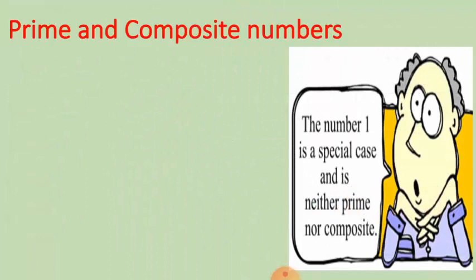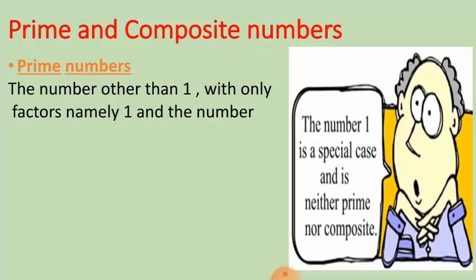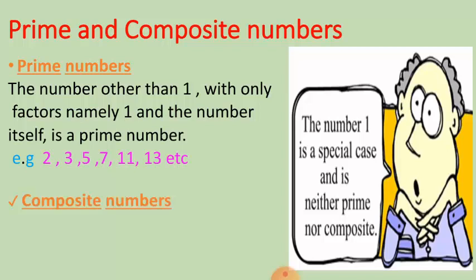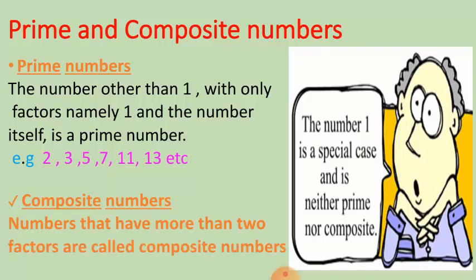Let's have a quick recap on prime and composite numbers. Prime numbers have only two factors, which we can remember from the word 'prime': 'I' represents one and 'me' represents the number itself. Composite numbers have more than two factors — examples are present on the screen. Keep in mind that the number one is a special case: it is neither prime nor composite.